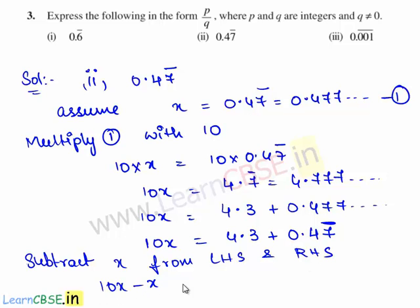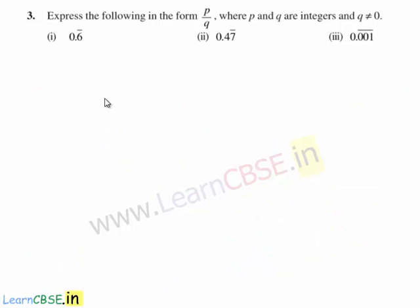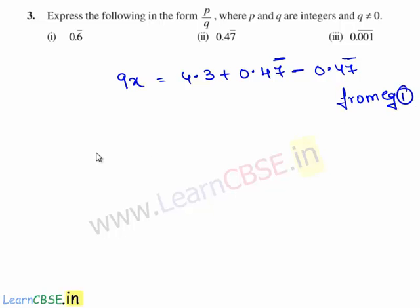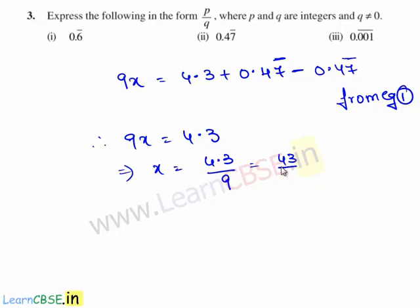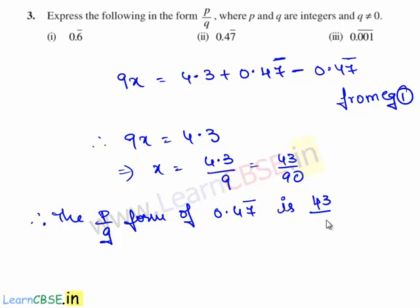Now 10x minus x is equal to 4.3 plus 0.47 bar minus x. So we have 9x is equal to 4.3 plus 0.47 bar minus 0.47 bar from equation 1. Therefore 9x is equal to 4.3, hence x is equal to 4.3 by 9, which is 43 by 90. Therefore the p by q form of 0.47 bar is 43 by 90, where p and q are integers and q is not equal to 0.